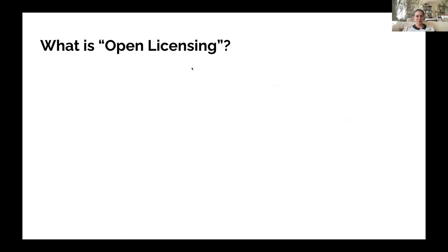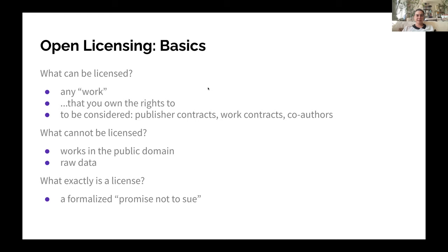Enough of the introduction — let's get down to business: open licensing. We've covered what 'open' means, so let's look at the basics of licensing. What is a license? As my colleague Pavel Kamotsky, chair of the CLARIN Legal Issues Committee, says: a license is basically a formalized promise not to sue. A contract is between two or more parties who agree on something. A license is the same thing, except you don't have a named partner.